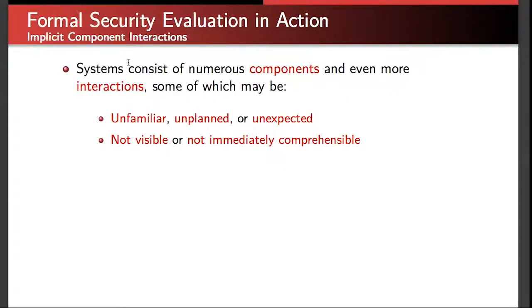Critical infrastructure systems consist of numerous components and even more interactions required for all of these components to orchestrate their behavior so the system does what it's supposed to do. Because of the size and complexity of these systems, some of these interactions may be unfamiliar, unplanned, or unexpected — simply not visible or not immediately comprehensible by the actual designers. We call these implicit interactions: they're not explicitly meant to be part of the system, but are a byproduct of the size, complexity, and intellectual unmanageability of the systems we develop today.